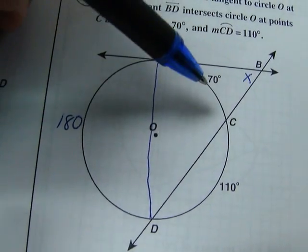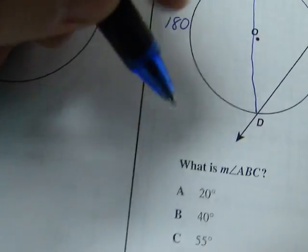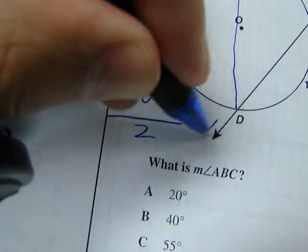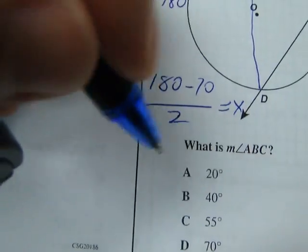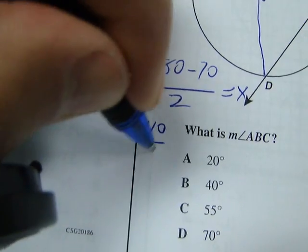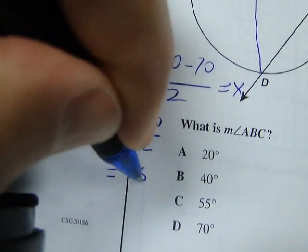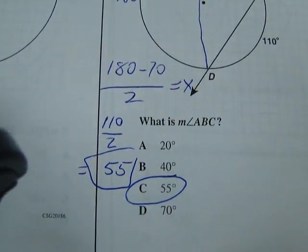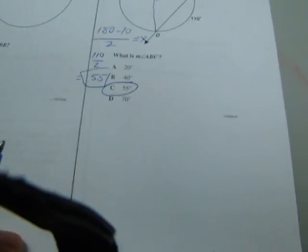180 minus 70 divided by 2 equals X. Let's write it down. 180 minus 70 divided by 2 equals X. 180 minus 70 is 110 divided by 2 equals 55. C is our answer. Okay. That was number 90.